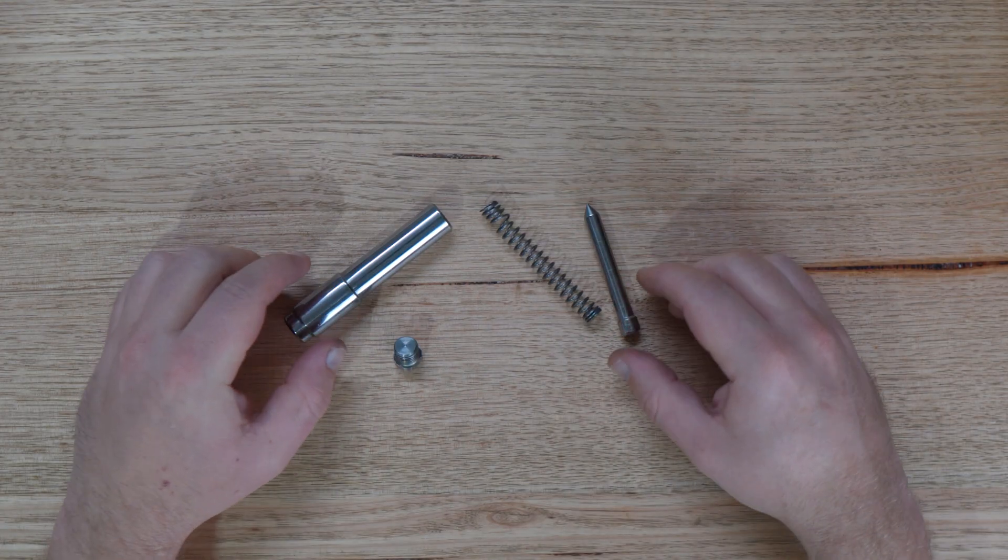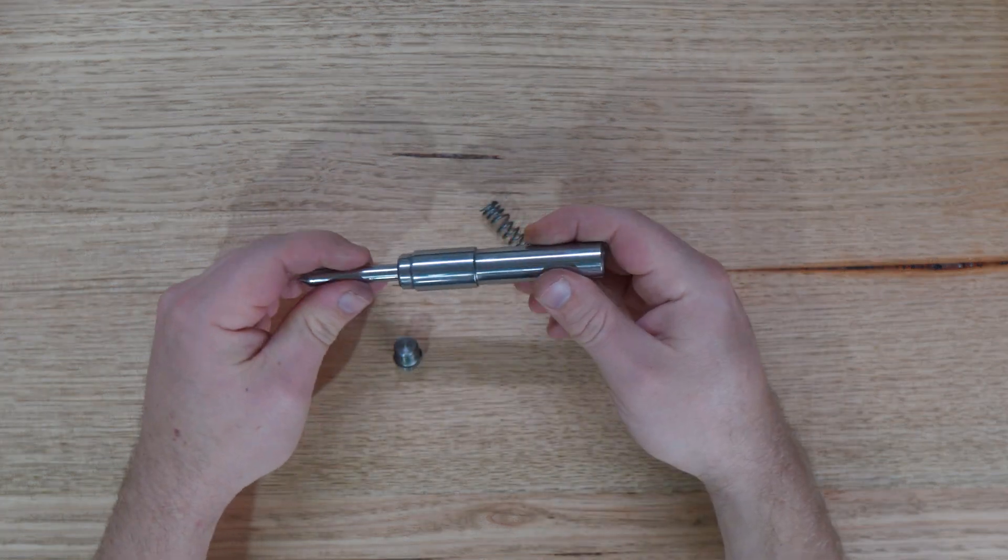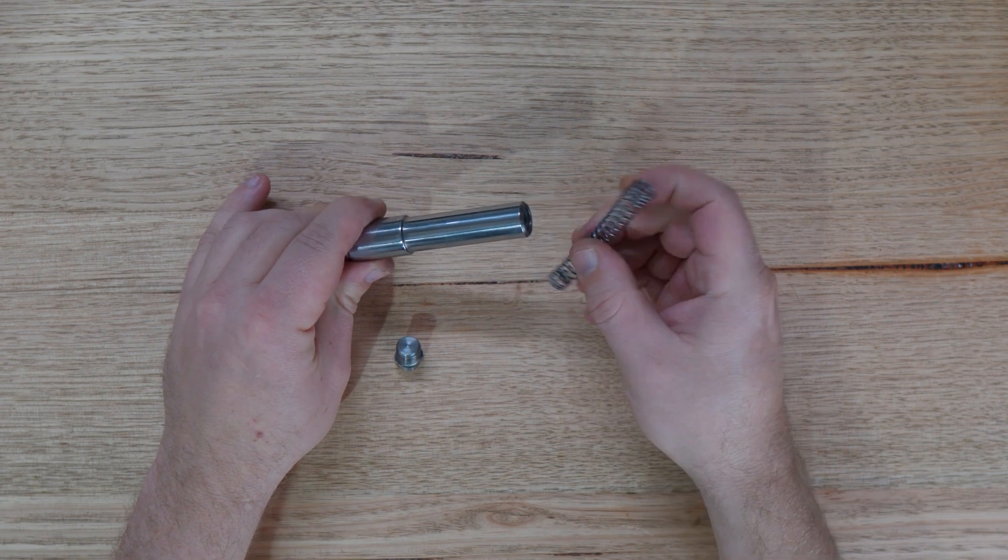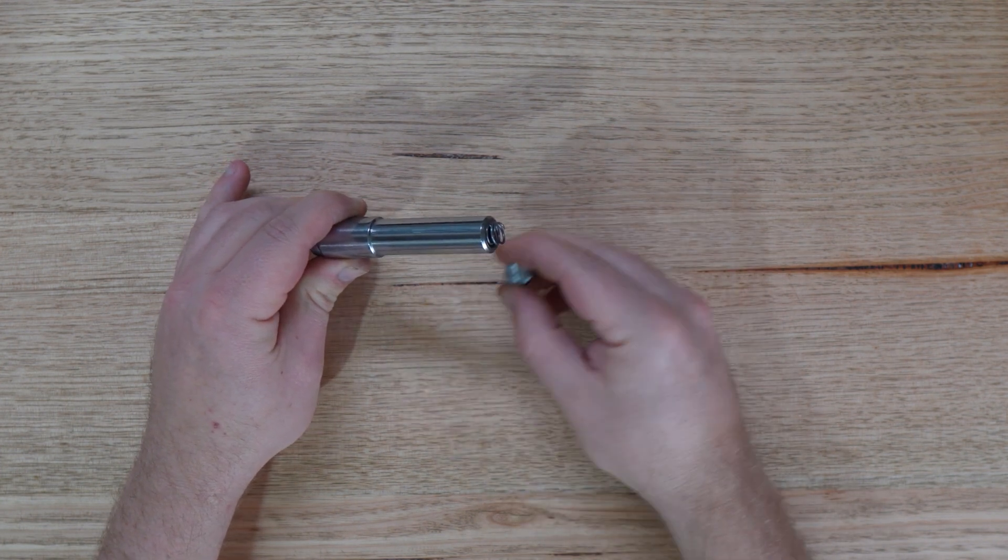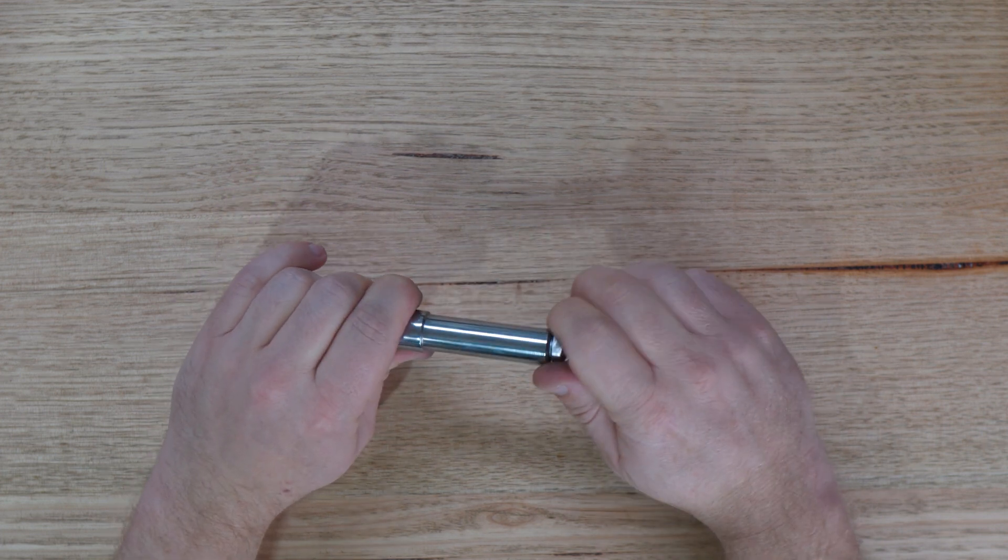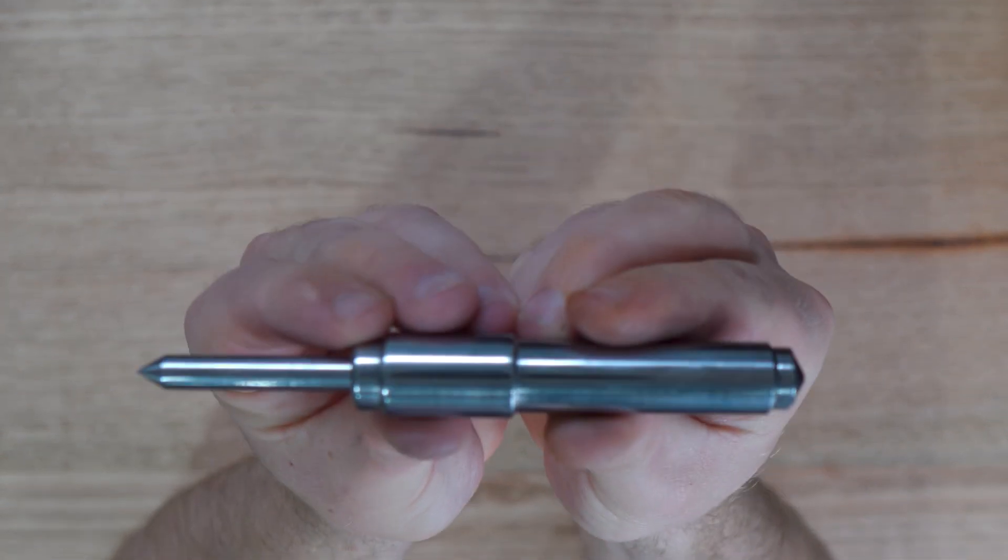Putting this one together is really straight forward. All I need to do is simply slide the pin inside the main body. Drop in the spring. And lock it all down with our bolt. And there we have it. Our spring loaded tap follower.